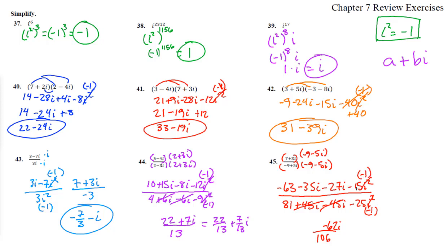Negative 63 plus 15 is negative 48. We can pull a 2 out of everything. If you take a 2 out of the top, you get negative 24 minus 31i. That's a 2 out of the top and a 2 times 53 on the bottom. Those two cancel out.